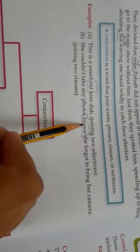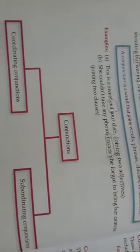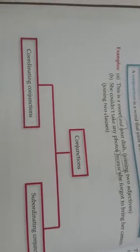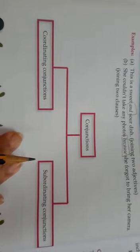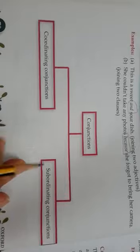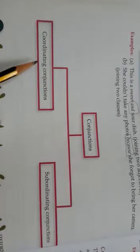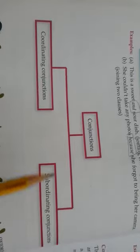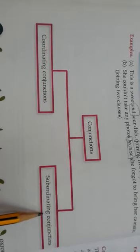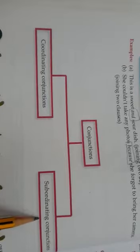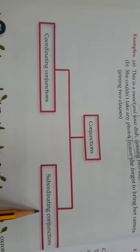Because is a conjunction. On page number 70 of your books, types of conjunctions are explained in the form of a flowchart. There are two types of conjunctions: coordinating conjunctions and subordinating conjunctions. We will discuss them in detail later on.